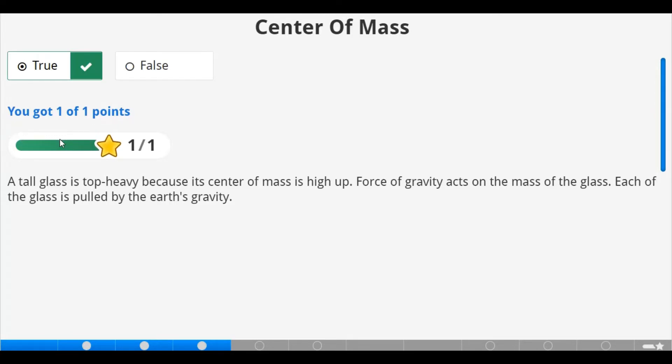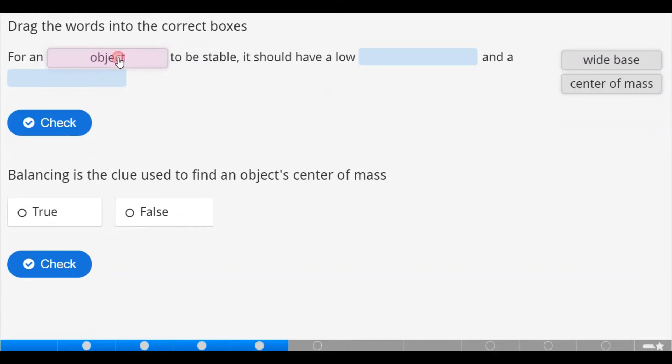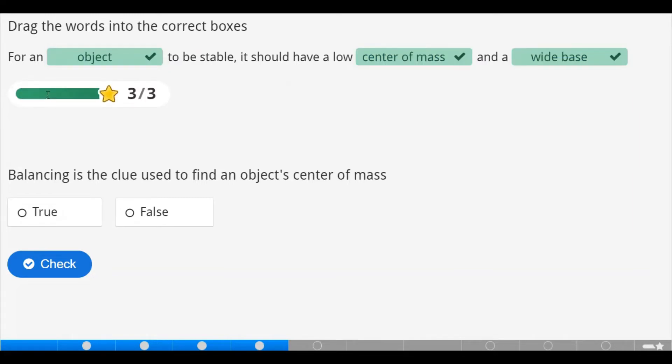A top glass is top heavy because the center of mass is high up. The force of gravity acts on the mass of the glass. Each part of the glass is pulled by the earth's gravity. We have to drag the following words into the correct boxes to also define center of mass. For an object to be stable it should have a low center of mass and a wide base. Let's check. Correct.